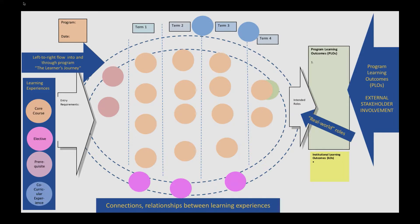Another thing we show with these maps are connections and relationships between the learning experiences. We can represent a close sequence of courses — maybe a two-term chemistry course where they have to be taken in order. There might be a thematic relationship, like a lecture and a lab combination in the same term. And there are sequential relationships where the learning outcomes for a prerequisite feed into the next course — why do I need to take that course? Because you need to meet those outcomes before you move on.